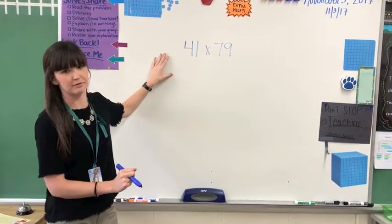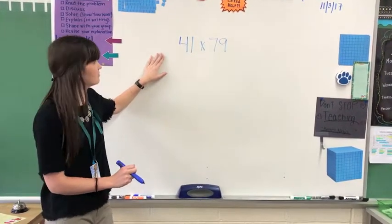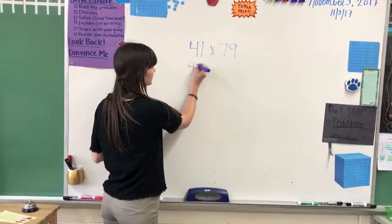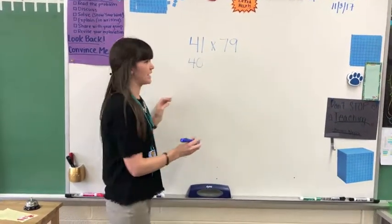So first we want to estimate this by rounding each number to the nearest ten. 41 is really close to 40, and 79 is really close to 80.